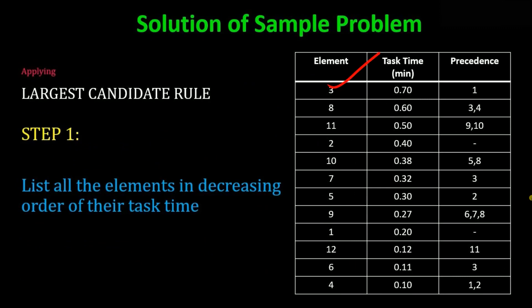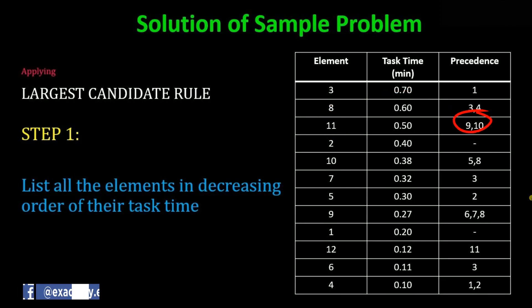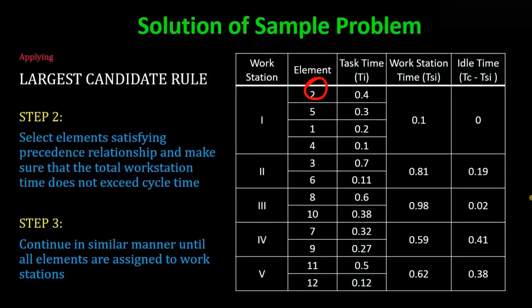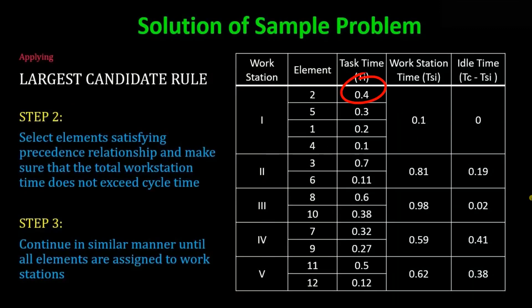Can we pick element 3 first? No — because before element 3 can be completed, element 1 must be done first, and it hasn't been done yet. Can we pick element 8? No — elements 3 and 4 must be completed first. Can we pick element 11? No — elements 9 and 10 must be done first. Can we pick element 2? Yes — element 2 has no unsatisfied predecessors. So we pick element 2. Its task time is 0.4, leaving 0.6 minutes available.